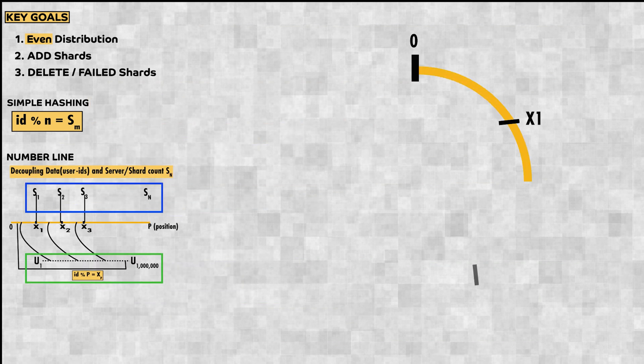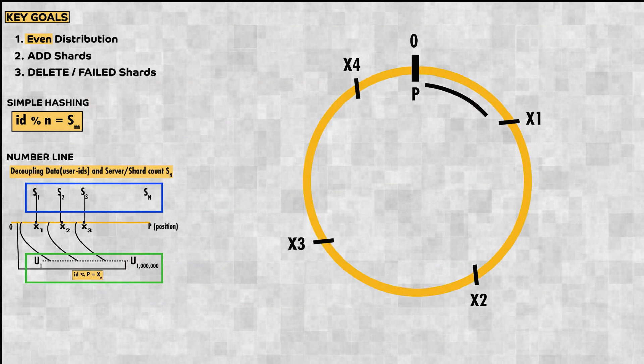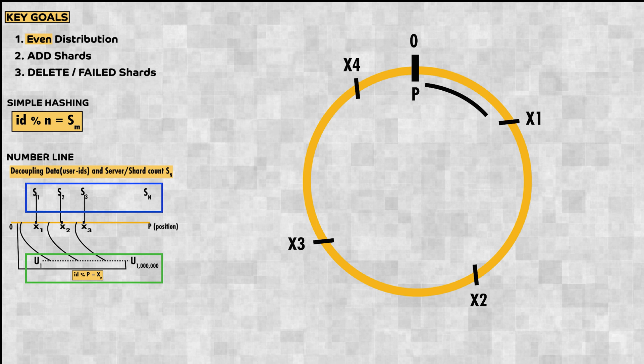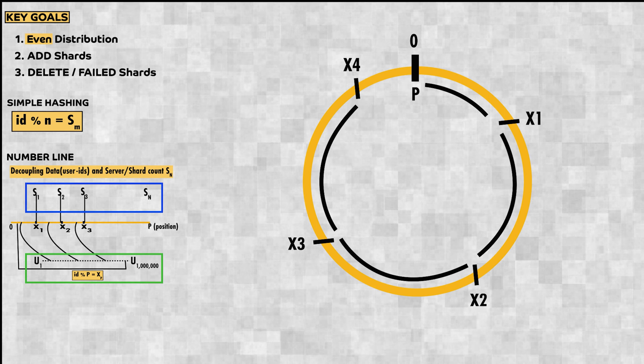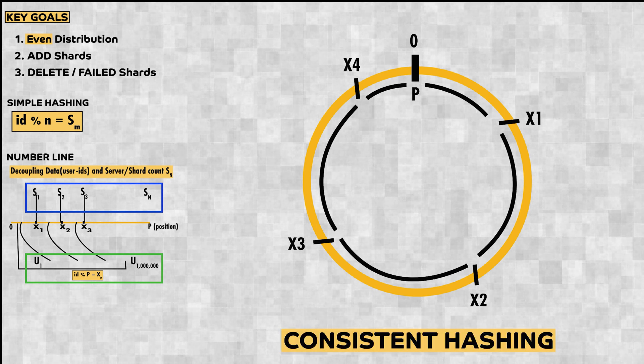A better visualization would be a circle, where ids falling in this region will be served by x1, ids falling in this region will be served by x2, and so on. This technique is consistent hashing.